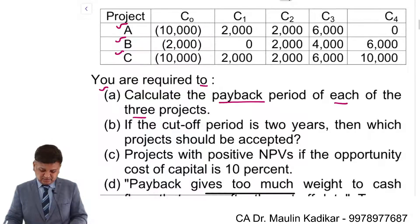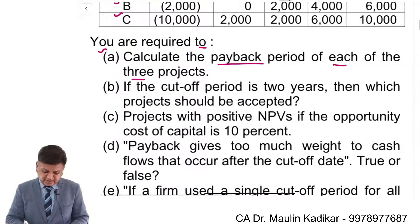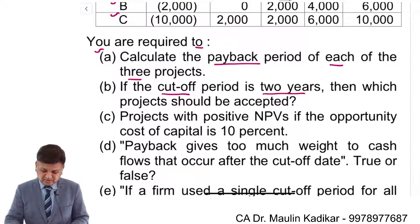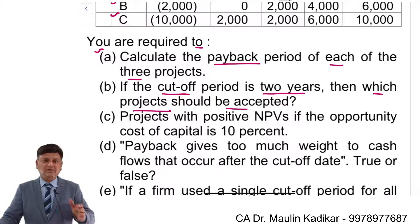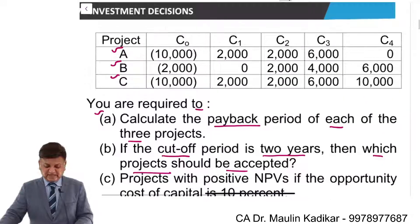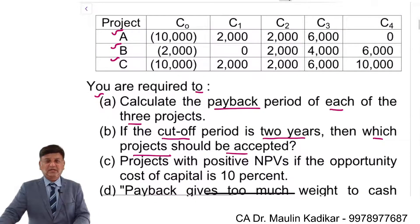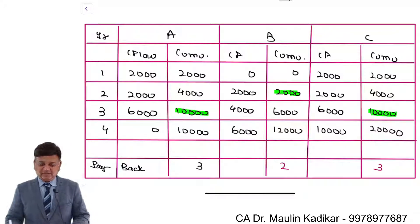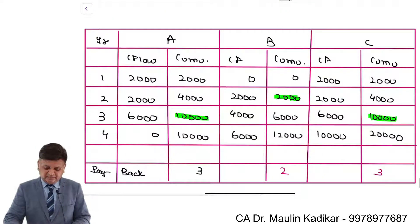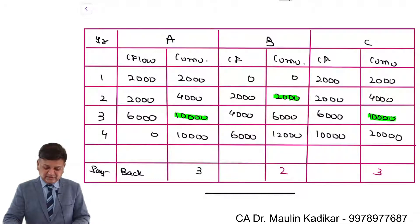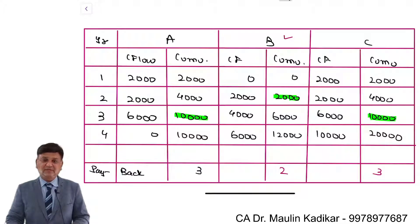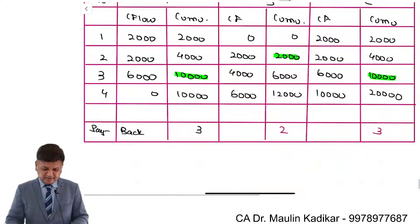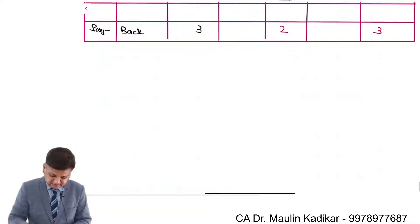The second question is: if the cutoff period is 2 years, then which projects should be accepted? If the standard payback period is 2 years, then only Project B would be accepted, because Project B has a payback period of 2 years, which is within the standard payback period.